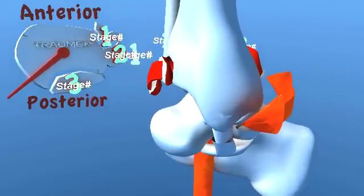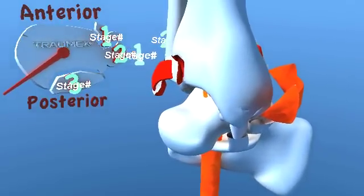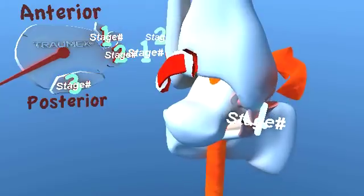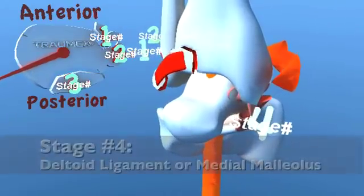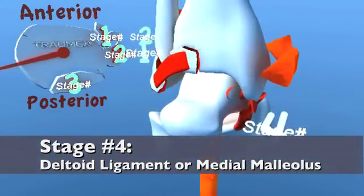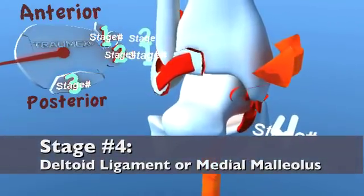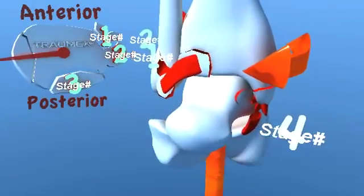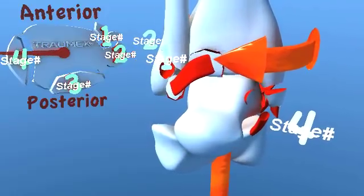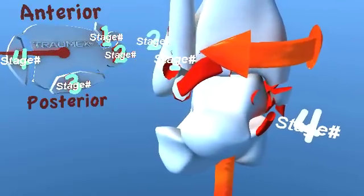Continued unrestrained lateral rotation of the talus will result in a stage 4 injury, involving either a rupture of the deltoid ligament complex or a transverse fracture of the medial malleolus.